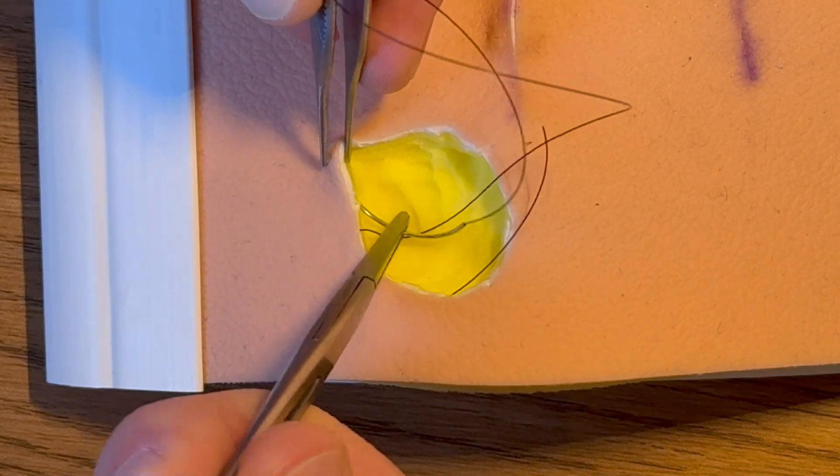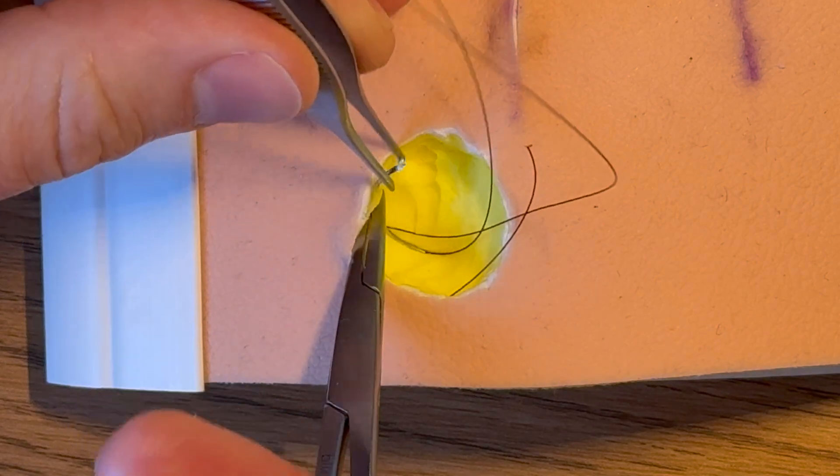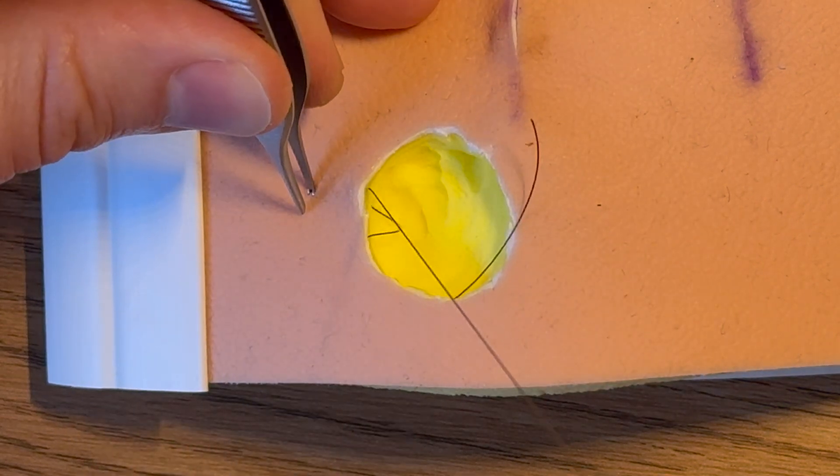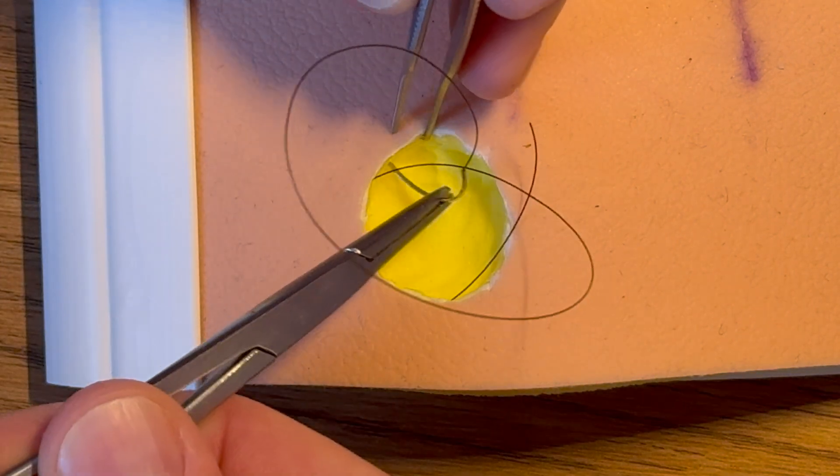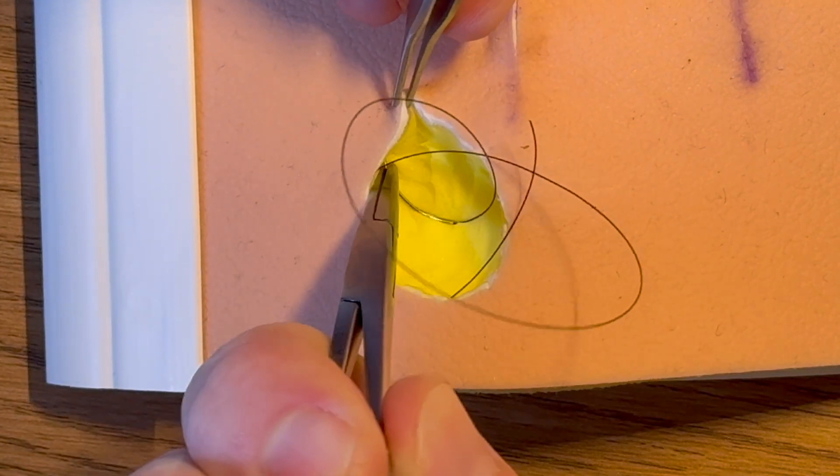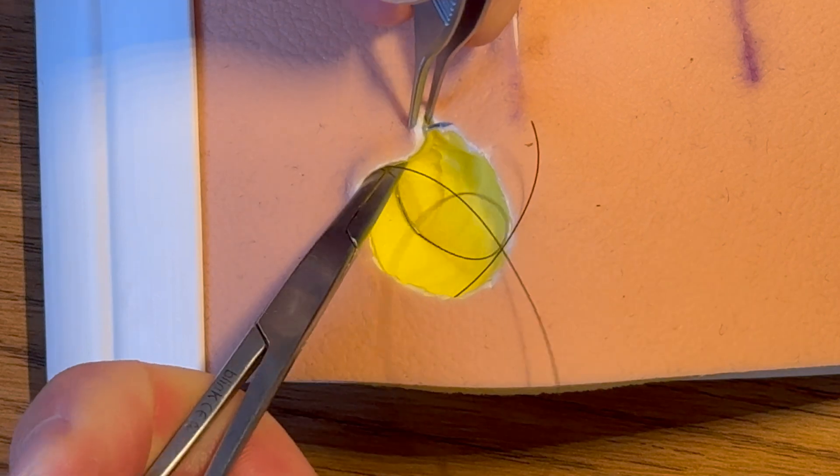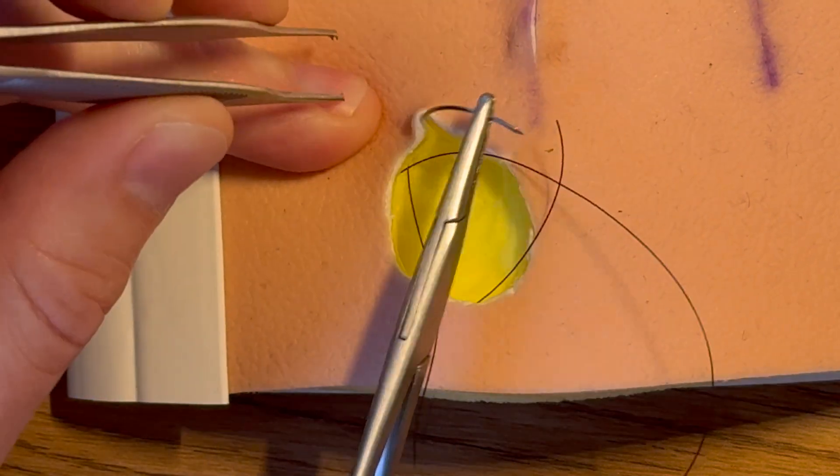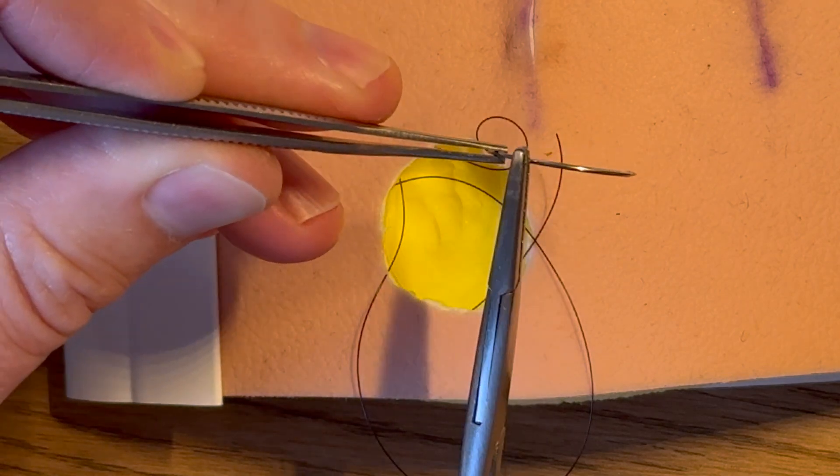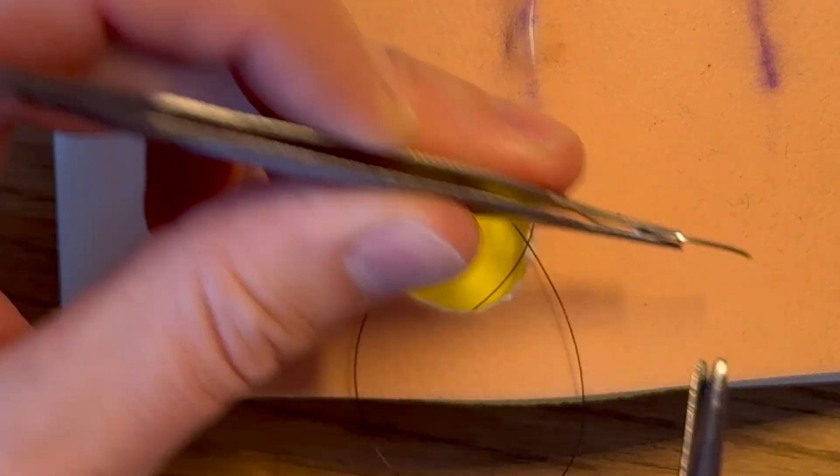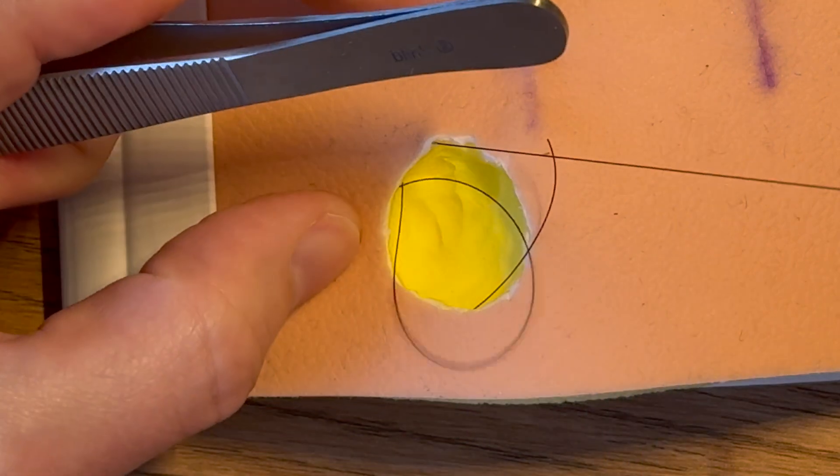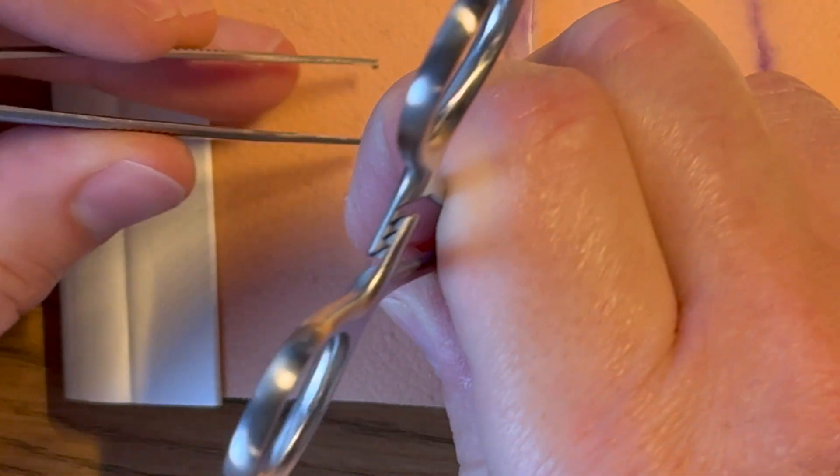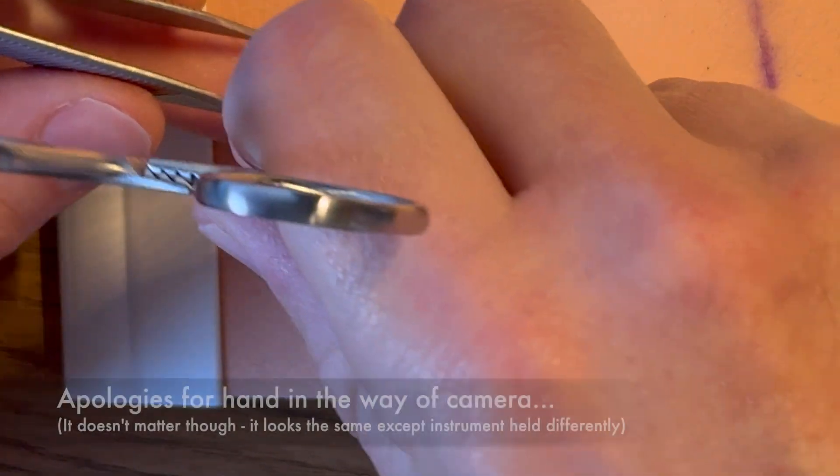I'm going to resist the temptation to turn the fake skin around because you usually can't do that with a human, and we just go around and around repeating that same sort of movement. Or you can take a pencil grip like this and then you can sort of twizzle it in and out.